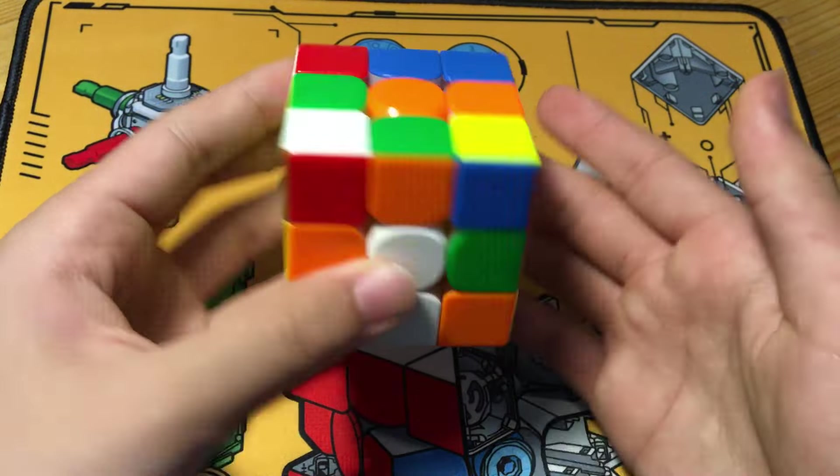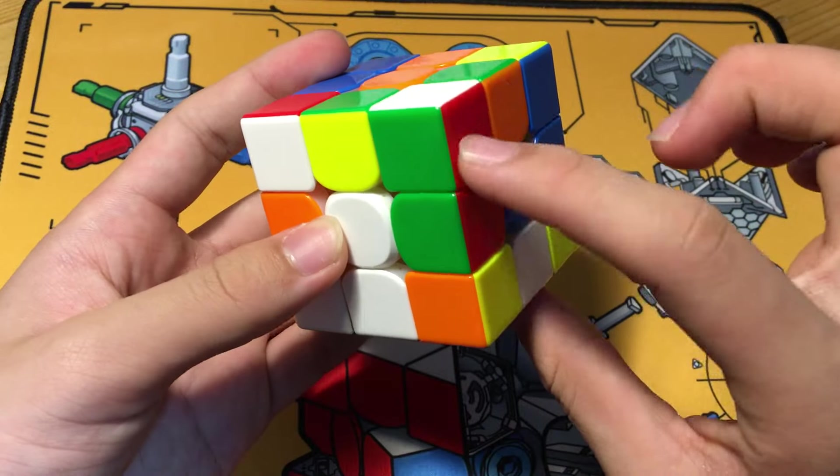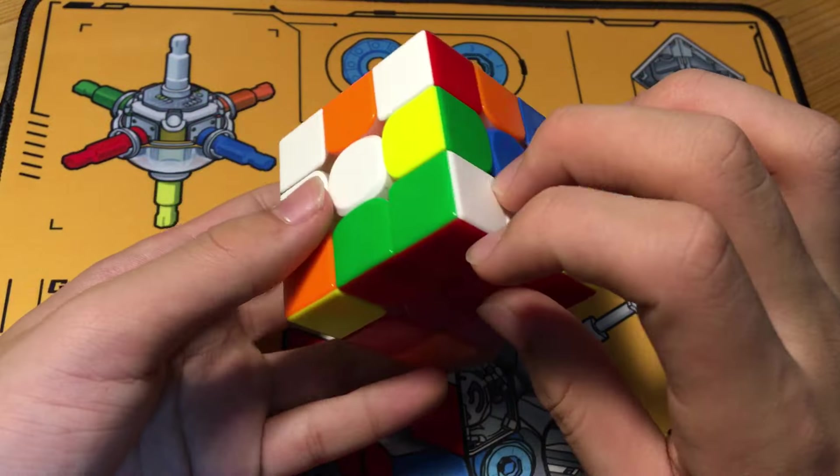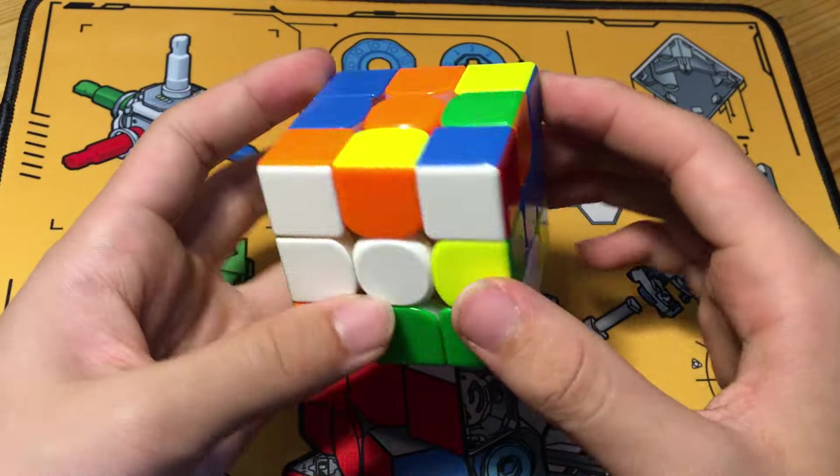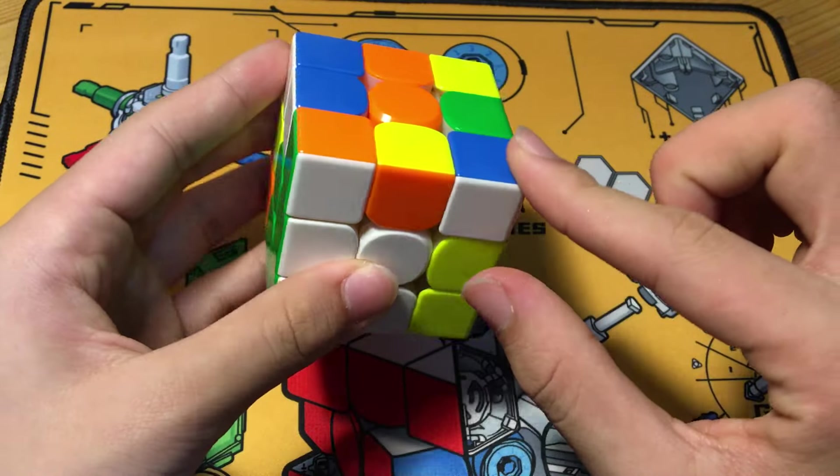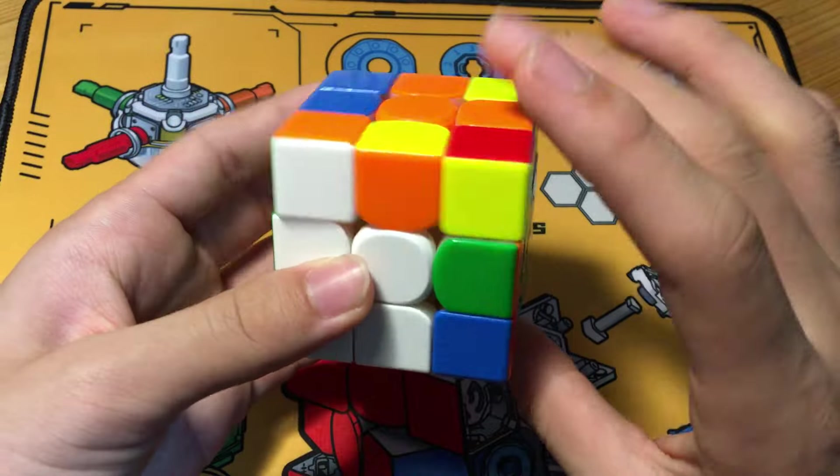And its corresponding corner is right here. So, basically, Timon says, why not insert a U' to form a block? So that he can insert this block and this edge together, like so. And now, with an X-cross solved, he solves his second pair.